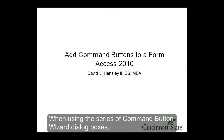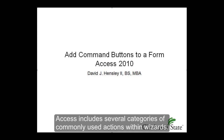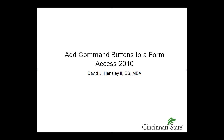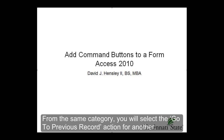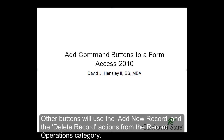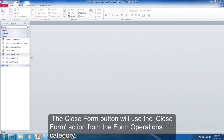When using the series of Command Button Wizard dialog boxes, you provide the action that should be taken when the command button is clicked — for example, go to the next record. Access includes several categories of commonly used actions within Wizards. In the Record Navigation category, you will select a Go to Next Record action and a Go to Previous Record action. Other buttons will use the Add New Record and the Delete Record action from the Record Operations category. The Close Form button will use the Close Form action from the Form Operations category.